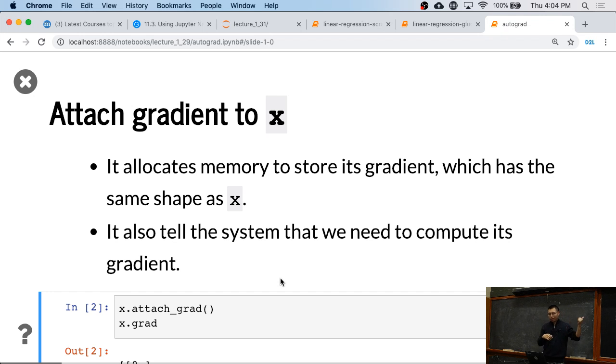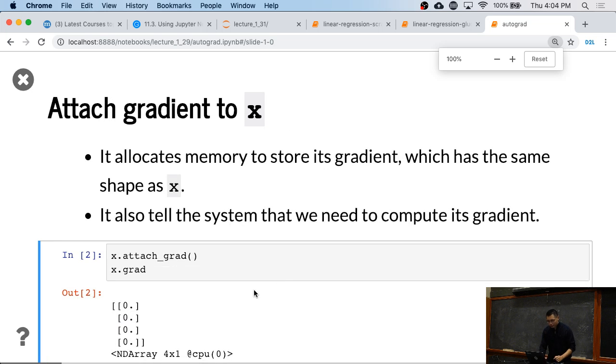So we tell the system, okay, we need gradient for X. If X is not attached gradients, we cannot compute gradient for X. Here, X attached gradients, we can call X.grad to get a gradient. It's initialized by zeros in default.